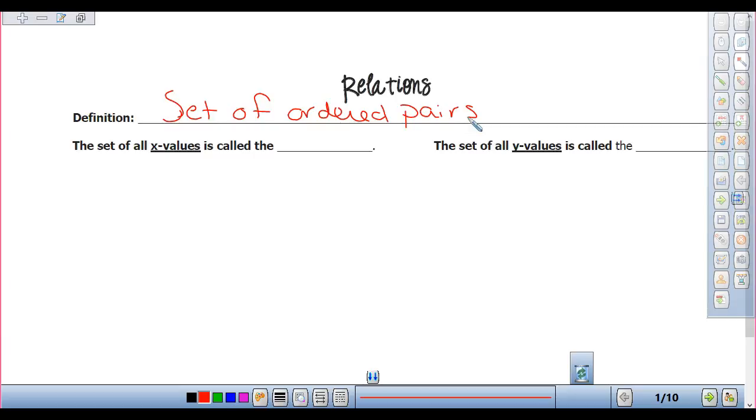Now, our x values of all of our ordered pairs are called the domain. All the y values are called the range. And we end up spending a lot of our time talking about domain and range.